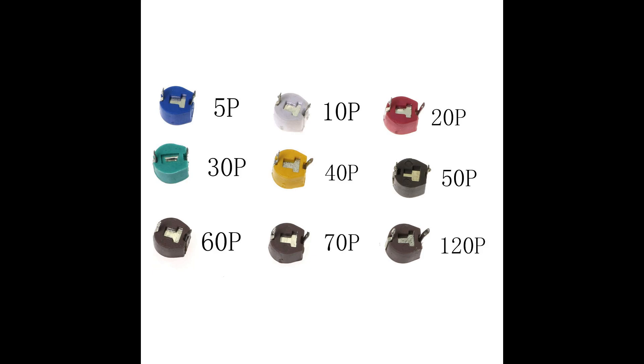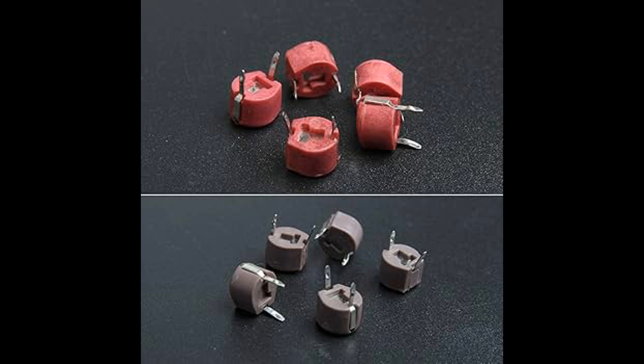In summary, a trimmer capacitor functions by allowing small mechanical adjustments to the physical properties of the plates — area or distance — which in turn alters the capacitance. This adjustability makes it useful for precise calibration in various electronic applications, particularly in RF and tuning circuits.